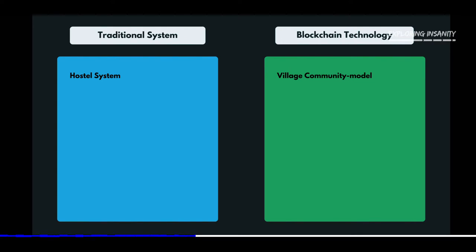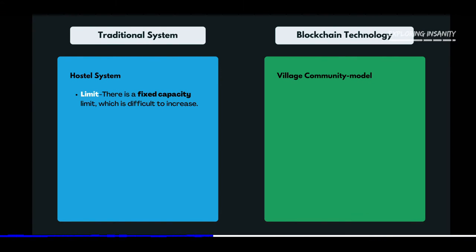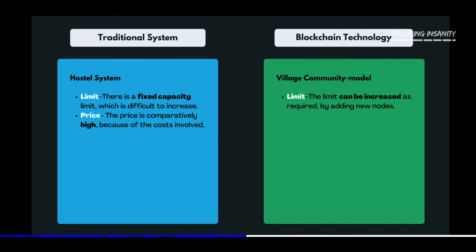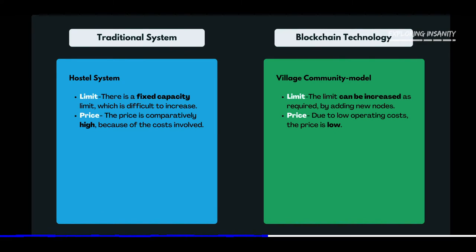To summarize: the hostel represents a traditional system and this community-based village model represents a blockchain system. Let's look at the differences. First, limit: in traditional systems, the limit is fixed and it is difficult to increase the maximum capacity because of costs and various other reasons. Whereas in blockchain technology, there is no fixed limit — it can be increased as per requirements by adding extra nodes and blocks. Second, price: the price in the traditional system is relatively high because of various cost involvement, while the price in the blockchain system can be comparatively low because of the non-involvement of intermediaries.